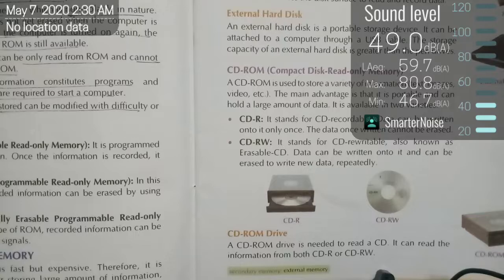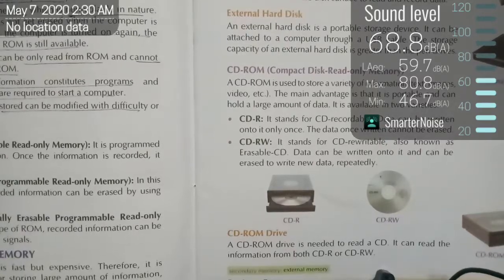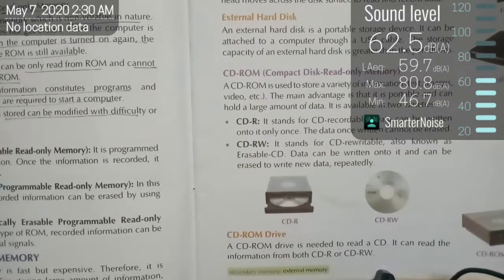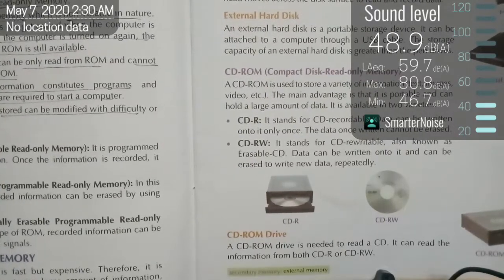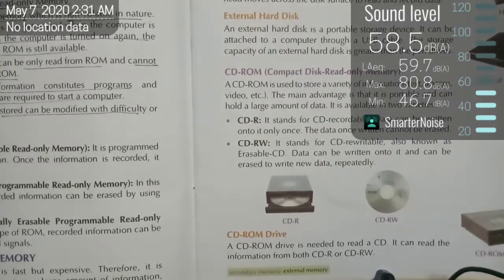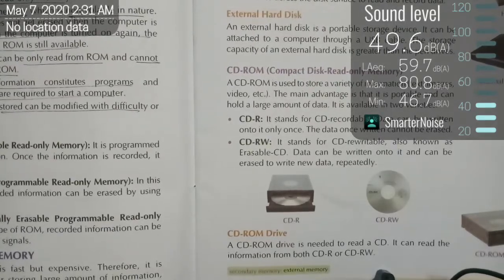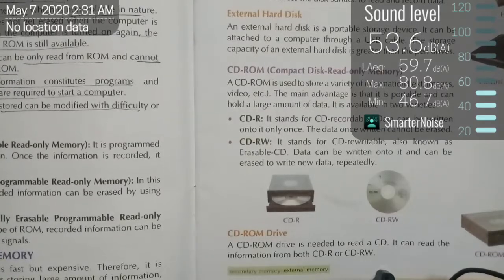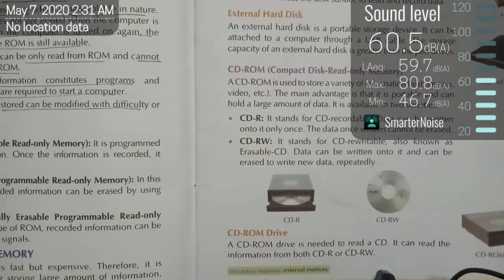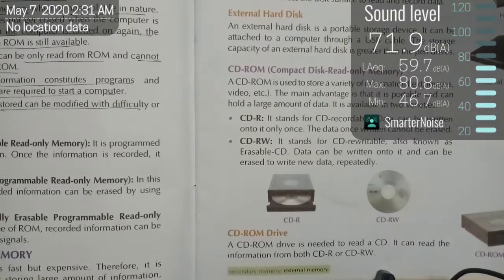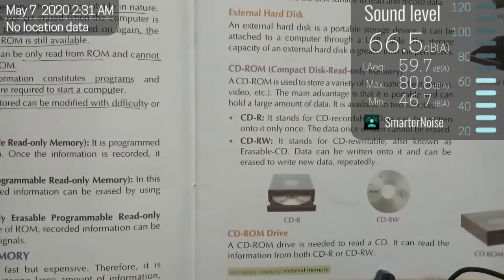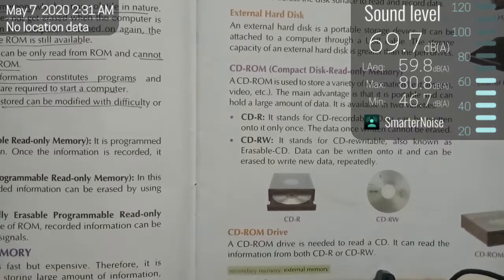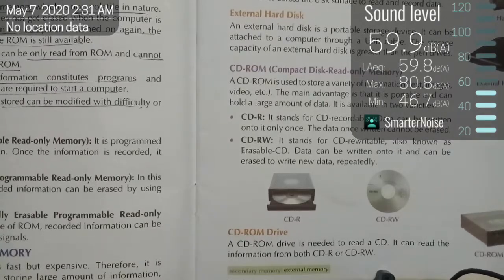CD-R stands for Compact Disk Recordable. Data can be written onto it only once, and the data once written cannot be erased. You can record on it, but after that you cannot erase it. CD-RW stands for Compact Disk Rewritable, also known as erasable CD. Data can be written onto it and can be erased to write new data repeatedly.